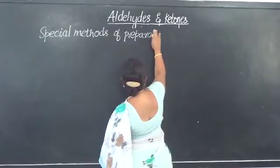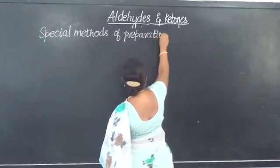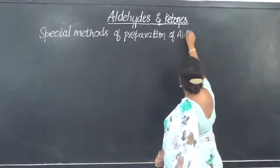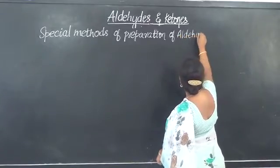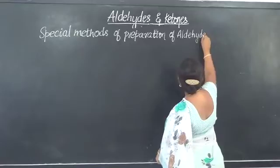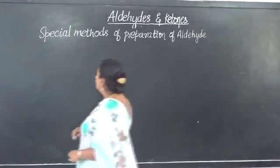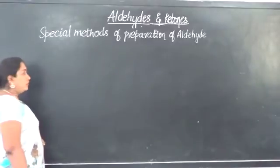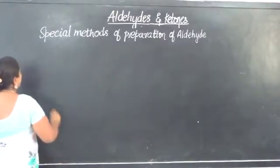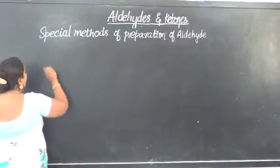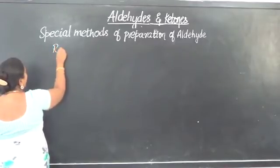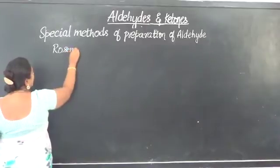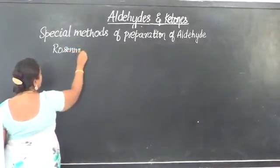Aldehydes can be obtained by different methods. There are some general methods of obtaining aldehydes and ketones, meaning both aldehydes and ketones are obtained by similar kinds of processes just by changing the reactants. Now here we are going to discuss only about the special method of obtaining only the aldehyde.